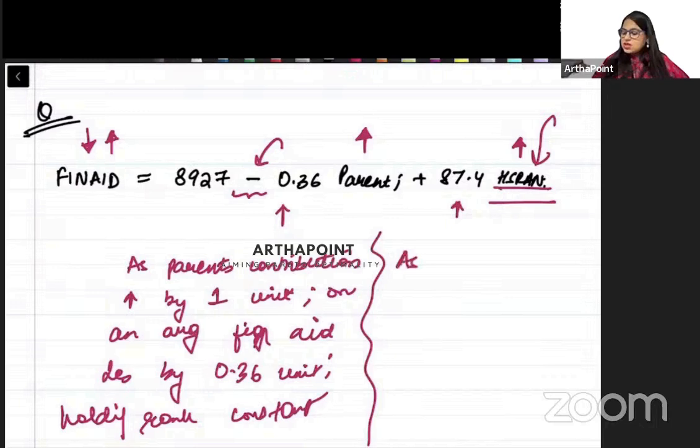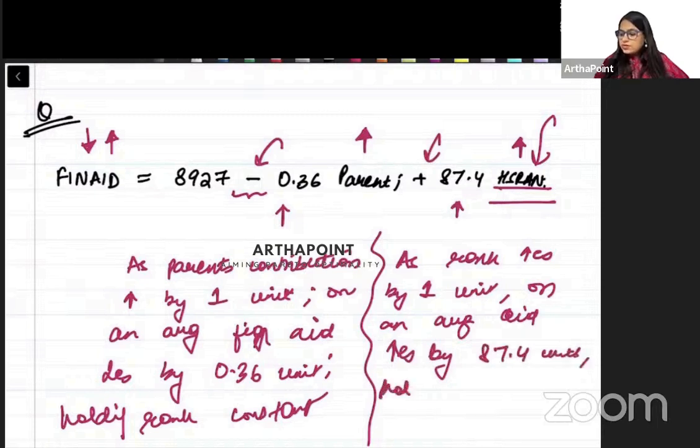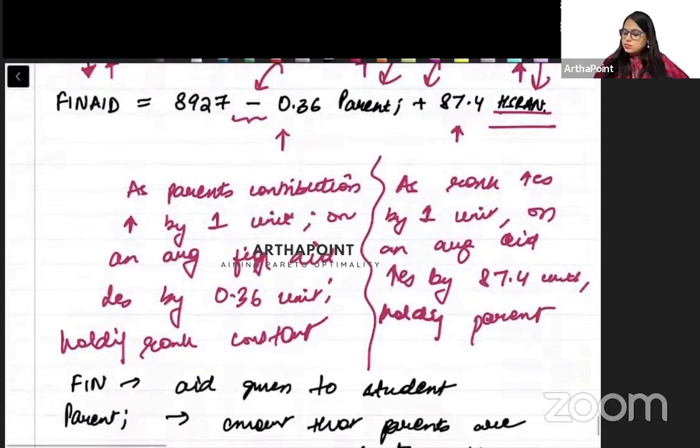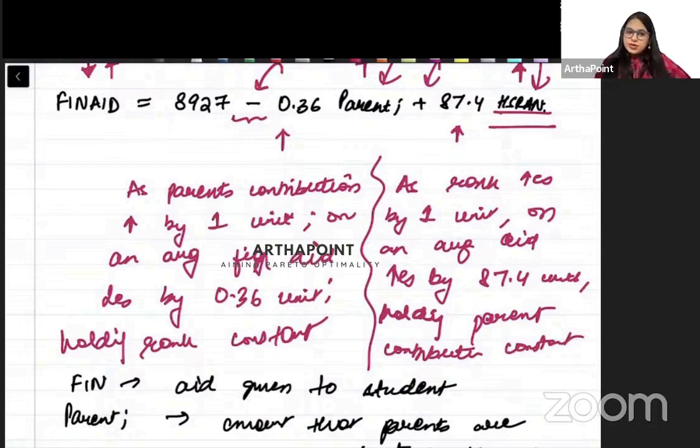This coefficient says: as rank increases by one unit, on an average aid - with a positive sign - increases by 87.4 units, holding parent contribution constant. This is how you can go ahead and do this kind of interpretation.